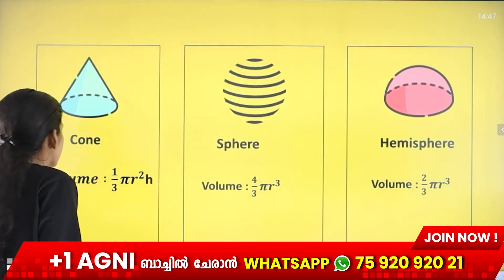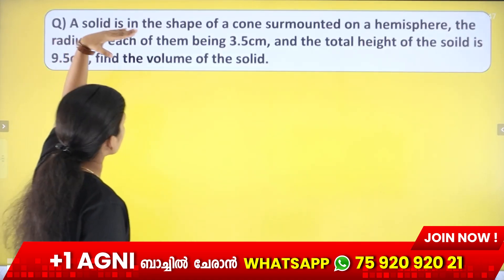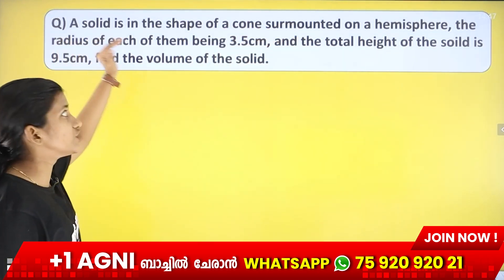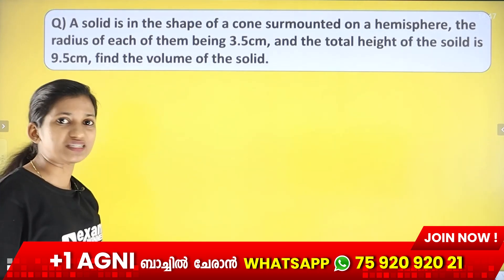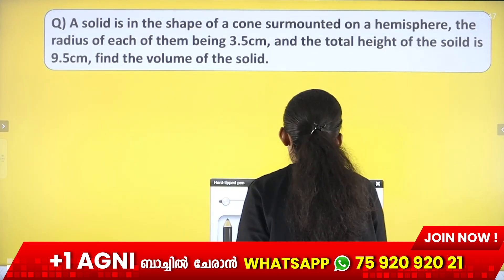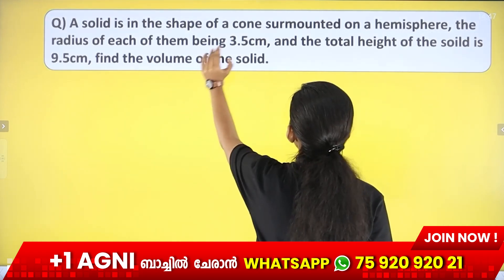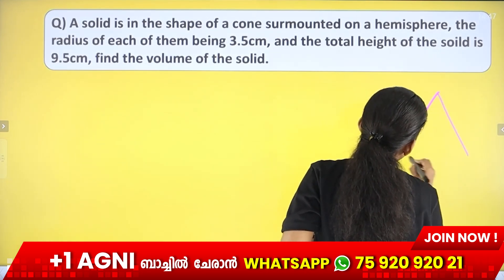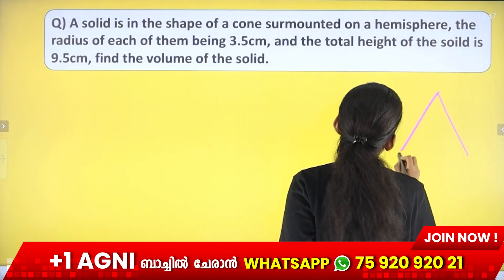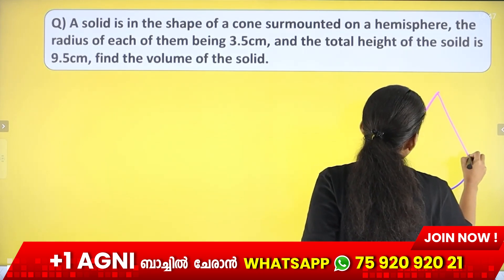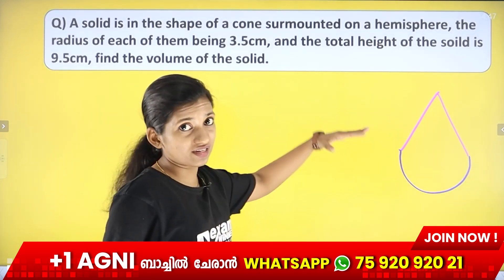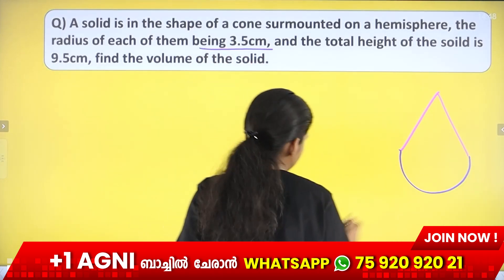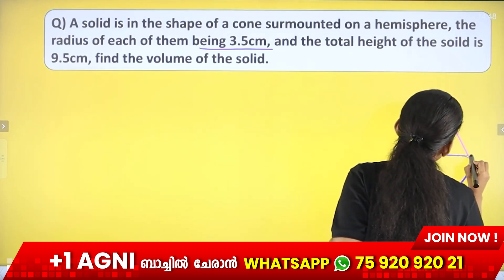We will solve some problems. First problem: a solid is in the shape of a cone surmounted on a hemisphere. The radius of each of them is 3.5 cm. In this rough figure, we have a cone on top of a hemisphere. The radius of each is 3.5 cm.